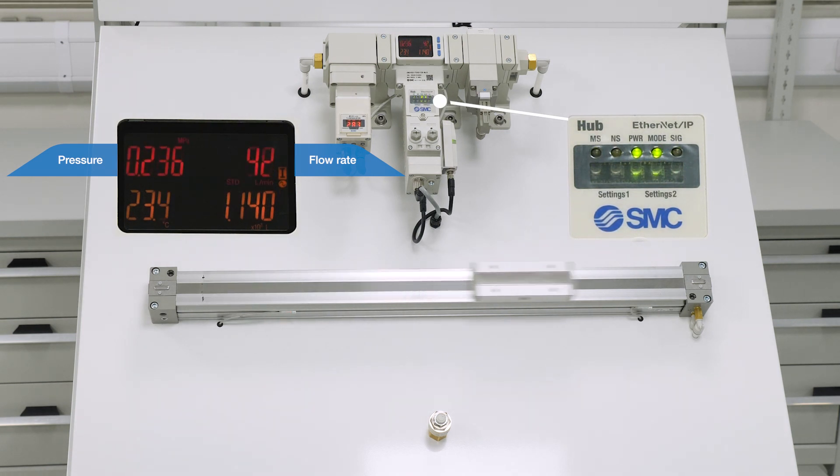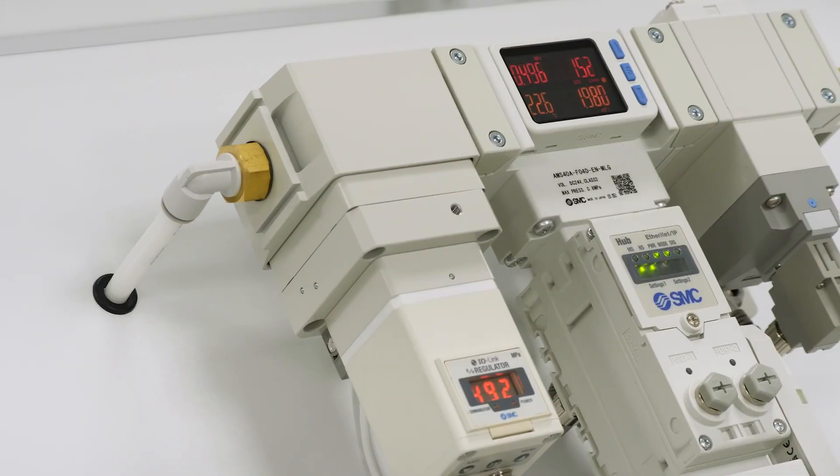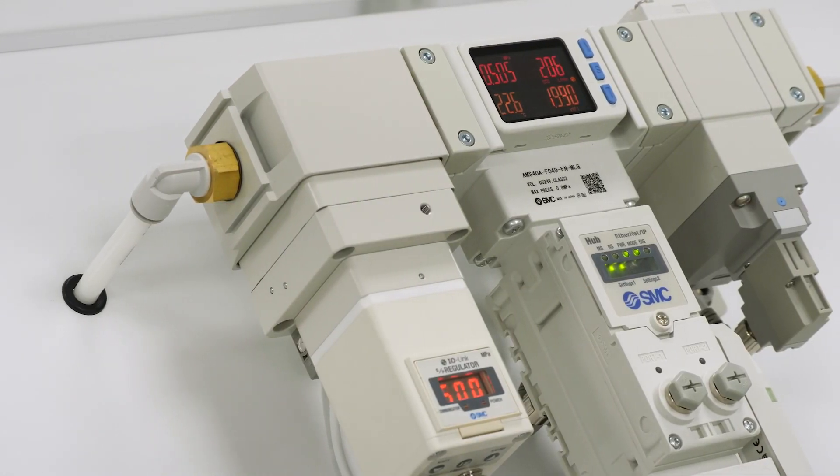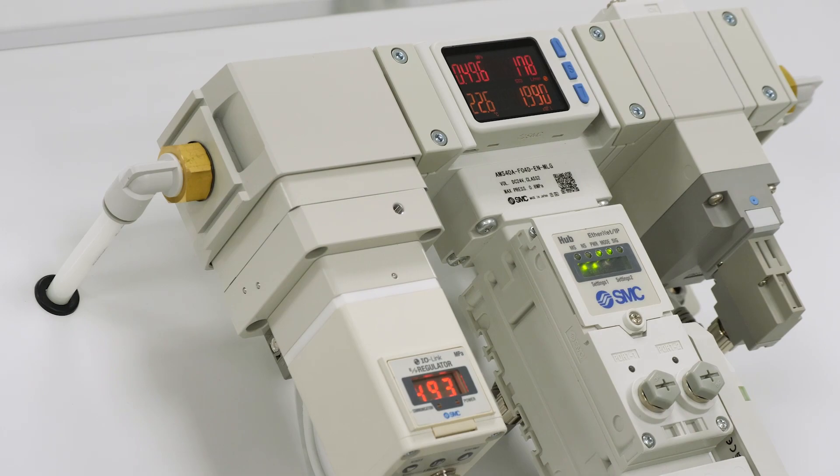When the machine is ready to start production again, it switches off the standby signal and pressure will now increase back to 5 bar. This concludes our introduction to the air management system and its energy saving features.